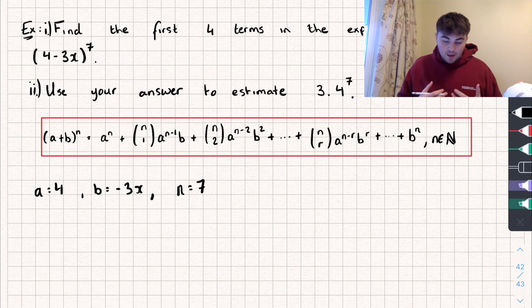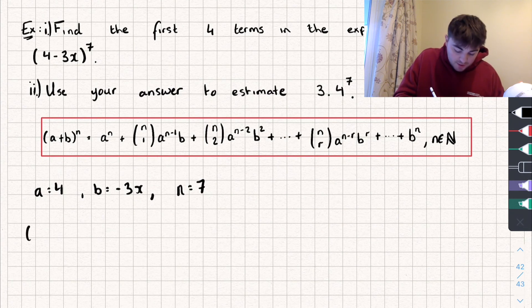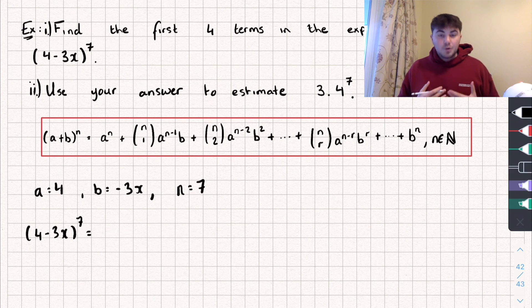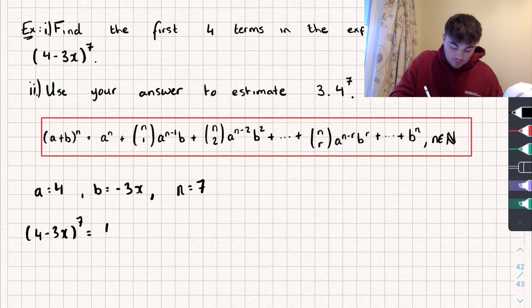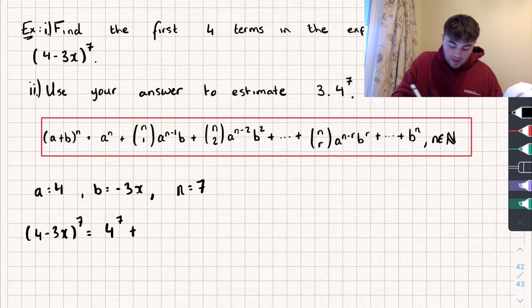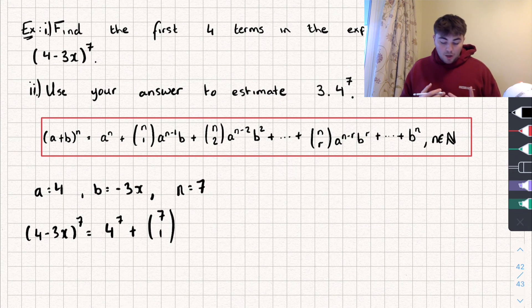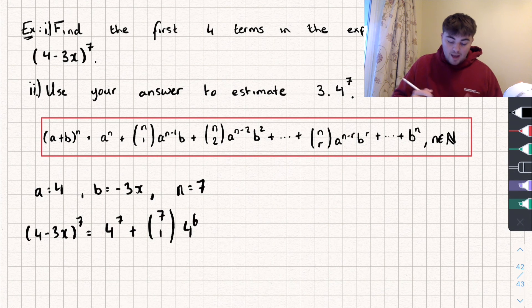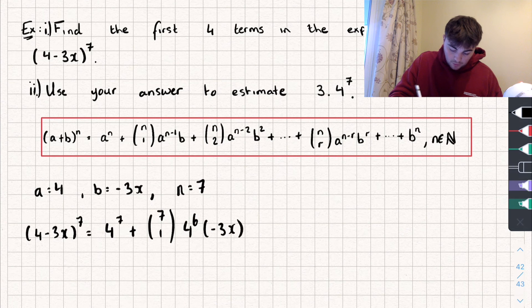So we can say, and we only need the first four terms, we can say that 4 minus 3x to the power of 7 is equal to, well it starts off with A to the power of n, so 4 to the power of 7. Then in the next term we're going to add on, well n choose 1, so 7 choose 1, multiplied by, well remember we just take one away from whatever A was raised to the power of, so 4 to the power of 7 minus 1. We have 4 to the power of 6, and now we multiply that by B, and B is negative 3x.